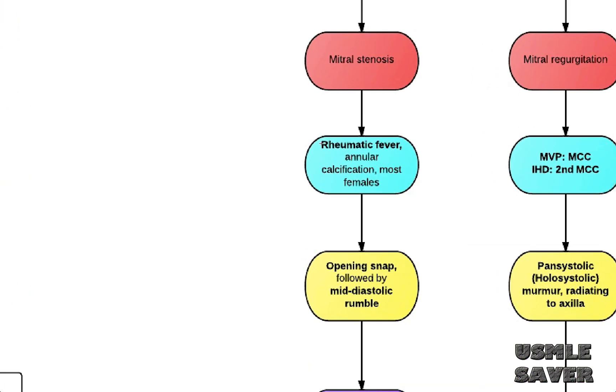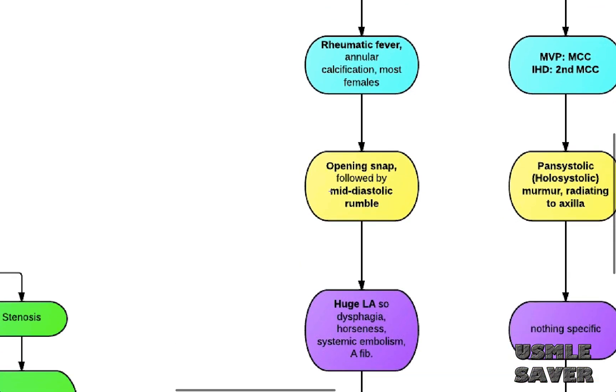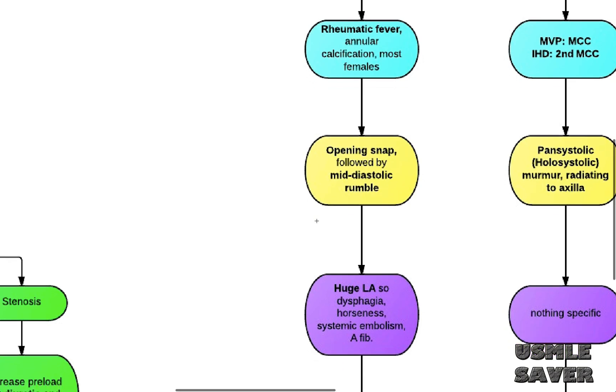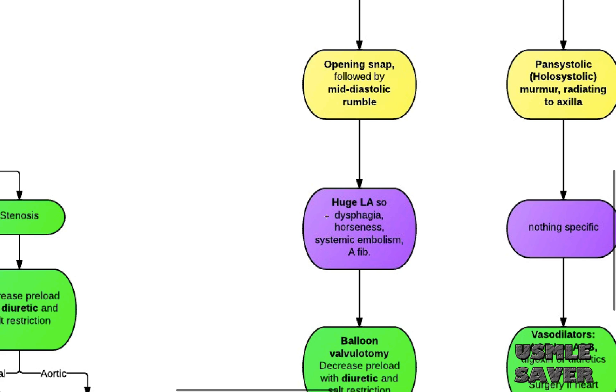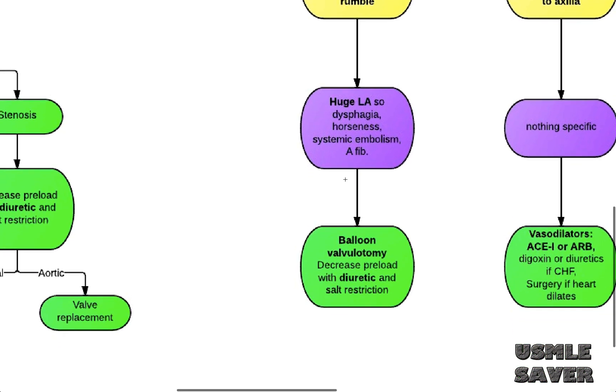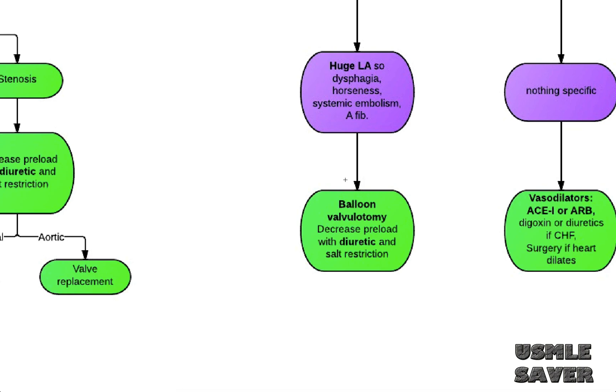Most common cause of mitral stenosis is rheumatic fever. Murmur for mitral stenosis is described as opening snap followed by mid-diastolic rumble. All these patients have huge left atrium, so symptoms would be dysphagia due to atrium-compressing esophagus or hoarseness due to atrium-compressing recurrent laryngeal nerve. These patients are also more likely to get systemic embolism due to higher chance of AFib. Remember, these patients are specific for mitral stenosis. There are more symptoms, but you want to focus on these. As we said before, manage these patients with diuretics and salt restriction. If symptoms are severe, balloon valvuloplasty is the definitive treatment. So this is it for mitral stenosis.